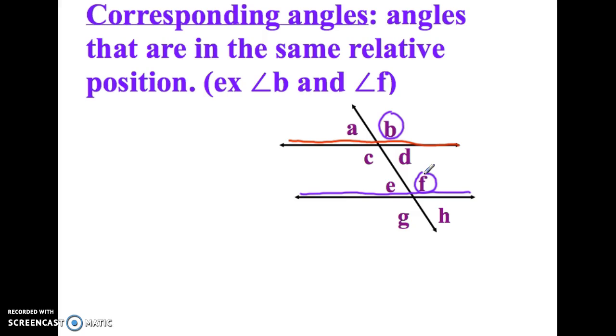Because if you look at them on B compared to the red line, it's on the top right. F compared to the bottom line, it's also on the top right. So if they're in the same relative position on their own line, we call that corresponding.